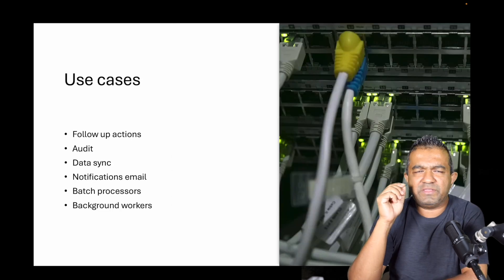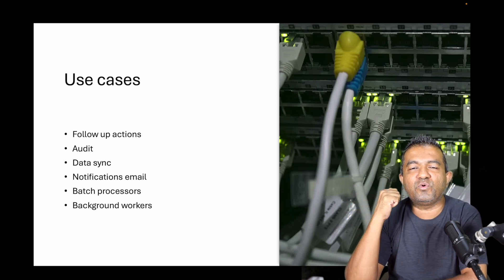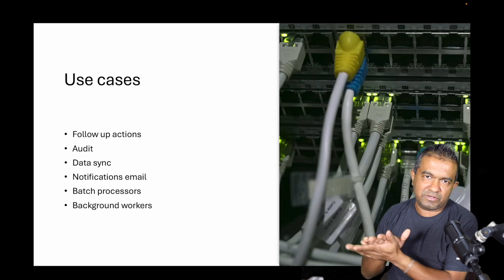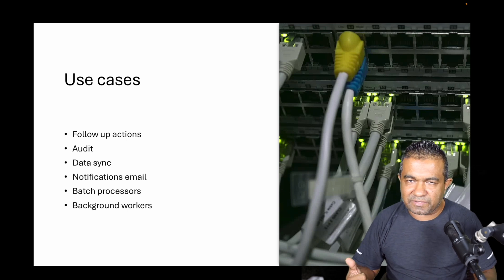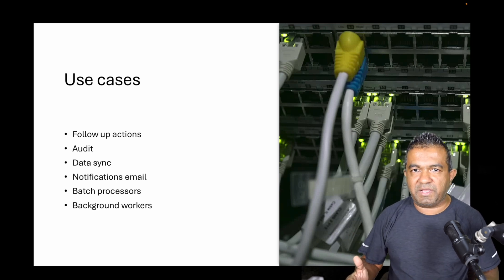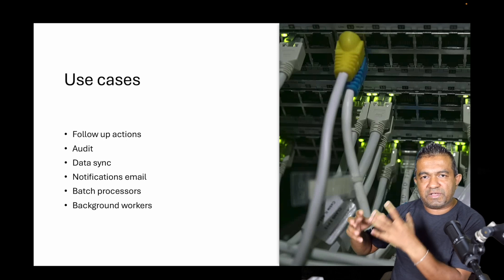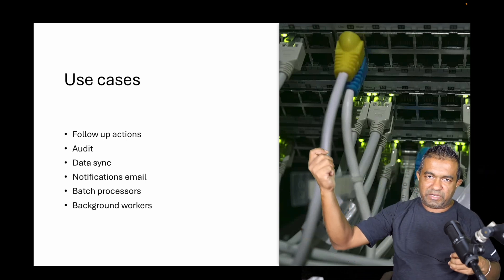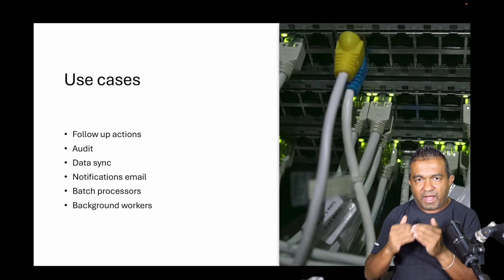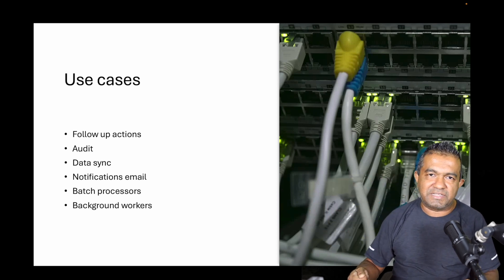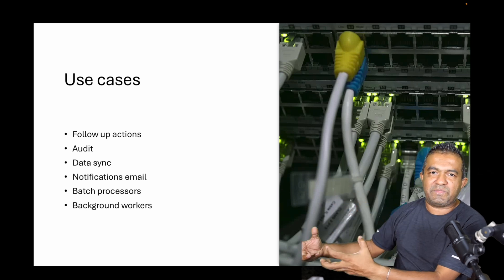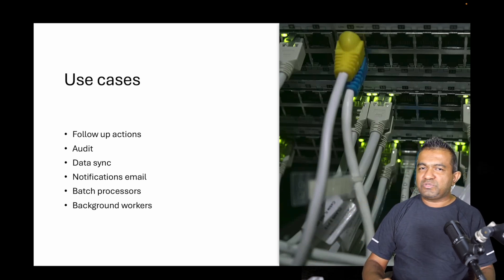So where can we use this? There are multiple use cases. One is auditing — audit trails — because when something happens you emit an event and the audit trail service takes that event and does the audit logging. We can also use it for data sync and inter-service communication. We can also use it for notifications and email sending. Email sending is a passive process — you do something, emit an event, then the email service receives the event and sends the email. You don't have to wait until the email is delivered.